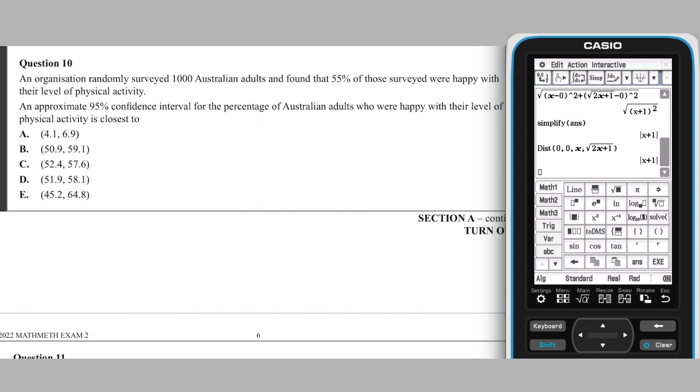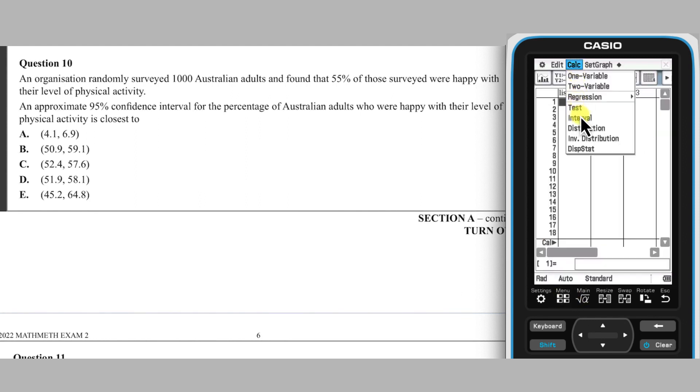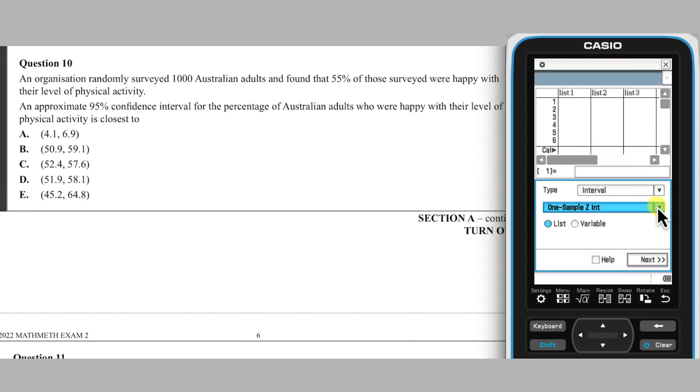This calculation can be done on ClassPad's statistics app. From the calculation menu, choose Interval. Select a one proportion Z interval, and tap Next.